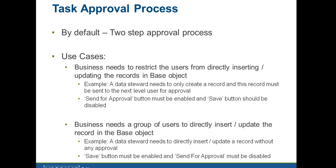In this case, the send for approval button must be enabled for the data steward and the save button should be disabled. The second use case is where the business needs a group of users to directly insert or update records in the base object — direct insertion with full privileges. For example, a data steward can directly insert or update a record without any approval process. In that case, the save button should be enabled and the send for approval button should be disabled.